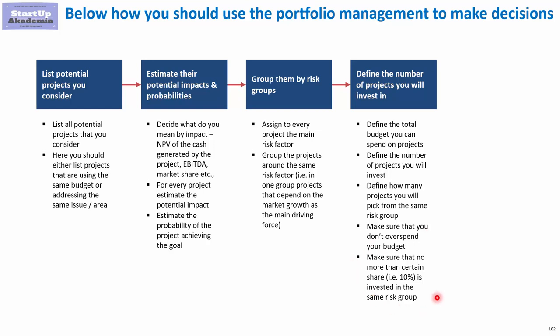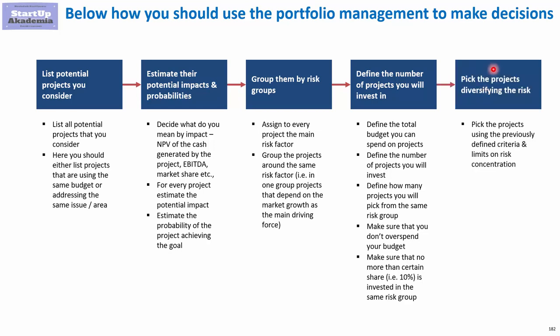The rest is simply implementing it by picking the right number of projects. Make sure you don't overspend your budget and that not too much money is put into the same risk group. Step five is picking projects while diversifying risk, using what was defined in steps three and four. We want a portfolio of independent projects — not the same risk repeated in each one — and on average the portfolio gives us the expected return.